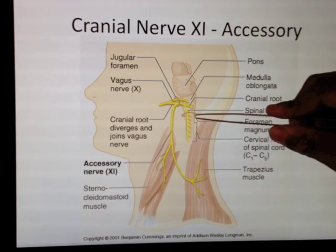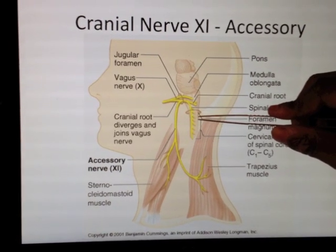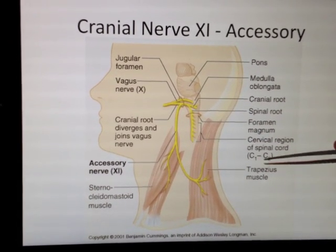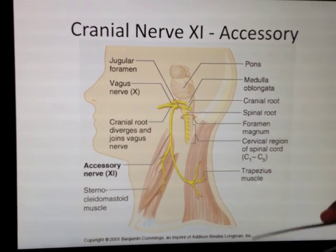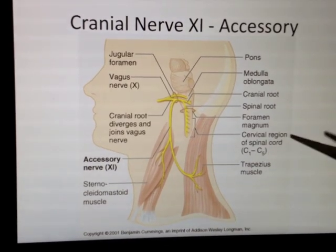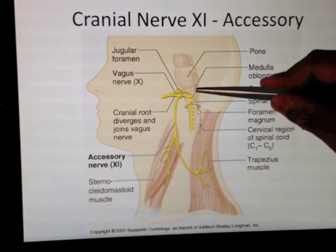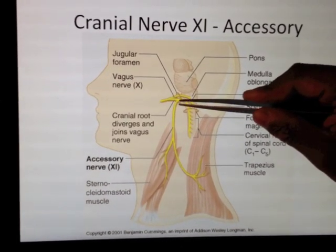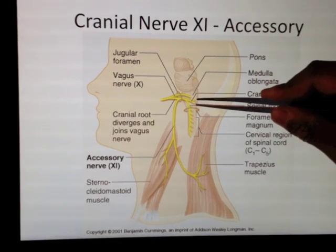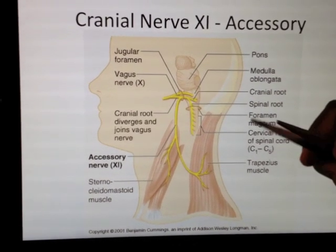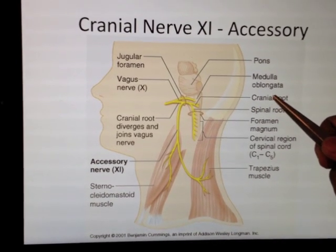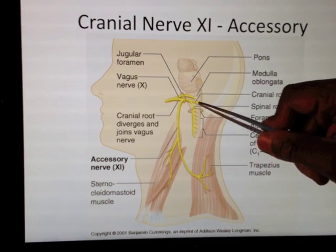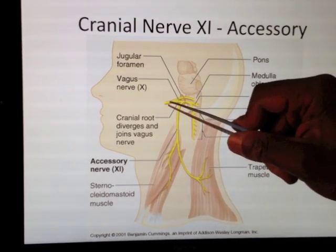It has bits which come from C1, 2, 3, 4, 5 — so C1 to 5. It also has bits which come directly, just like all the other cranial nerves, from the actual cranial root — straight off the medulla. So this is the medulla here, straight off the medulla.